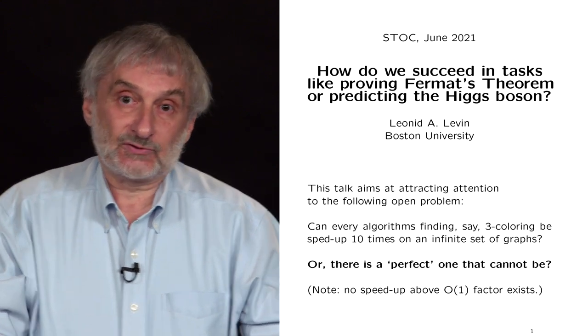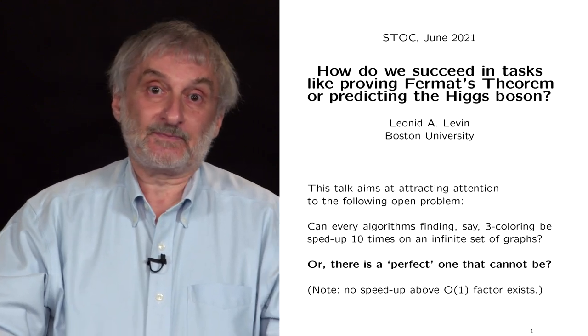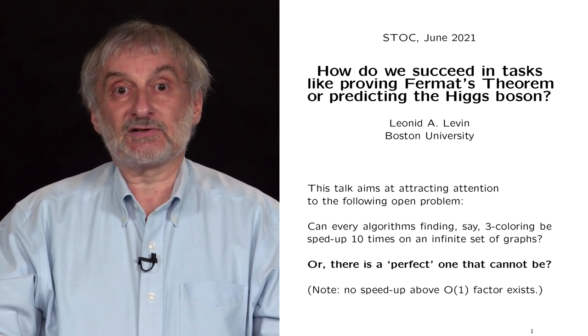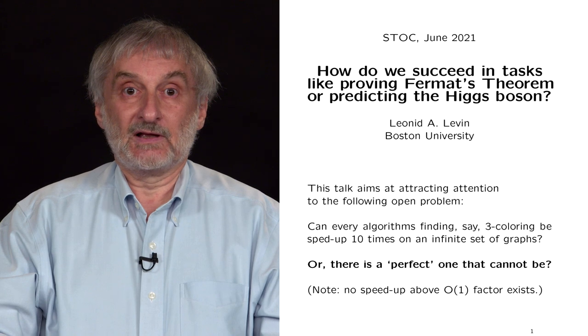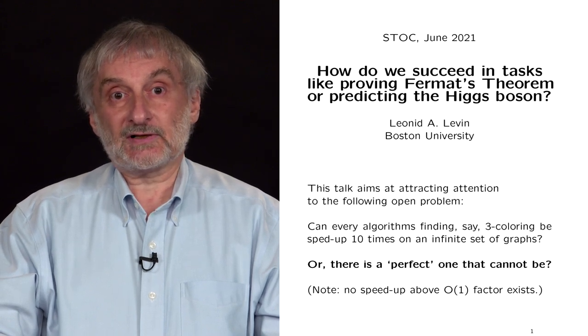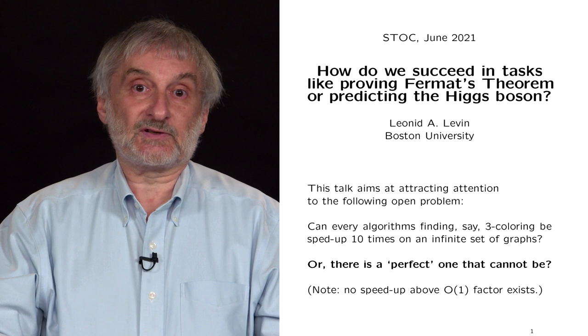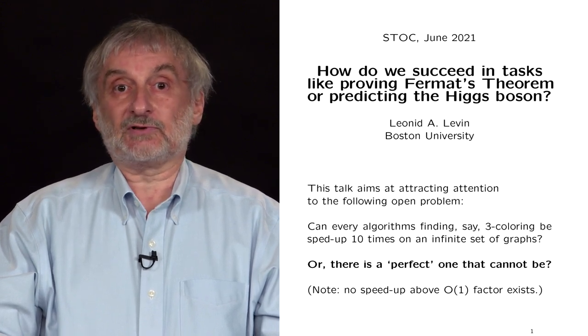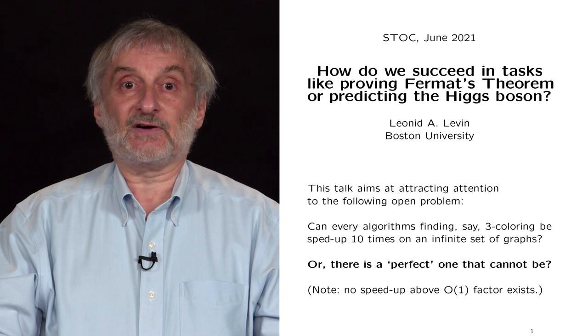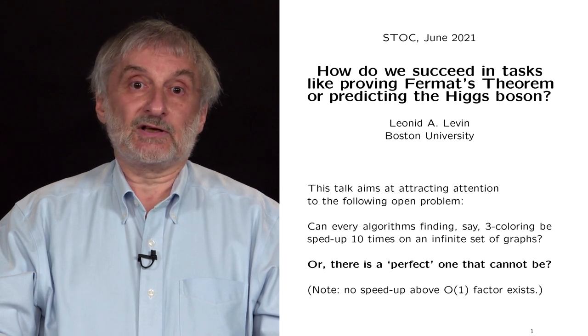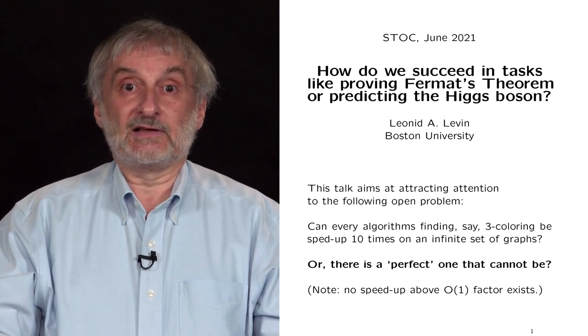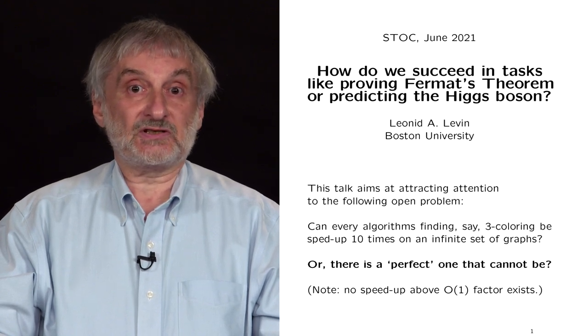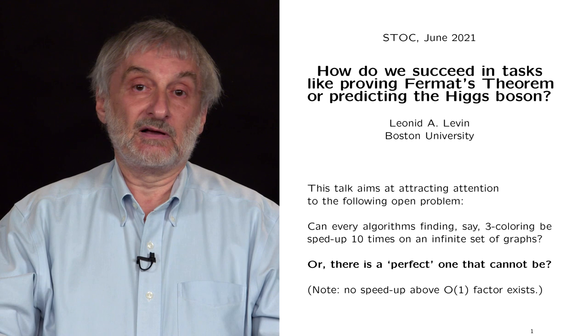What advantage do we humans have? One is the ability to solve new problems, those on which evolution did not train zillions of our ancestors. We must have some pretty universal methods, not dependent on the specifics of focused problems. Of course, it is hard to tell how mathematicians find their proofs. Yet, the diversity and dynamism of mass achievements suggest that some pretty universal mechanisms must be at work.